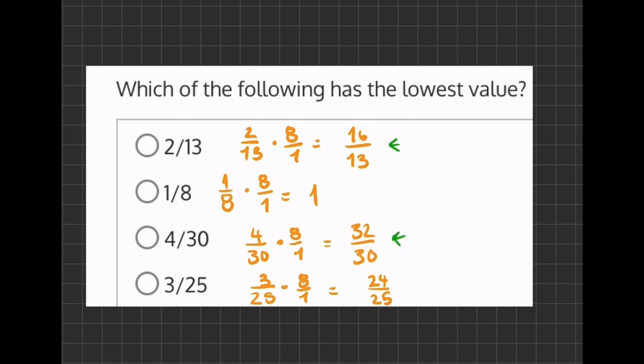32/30 is also larger than 1 because the denominators are smaller than the numerators, and this fraction is just equal to a whole 1.